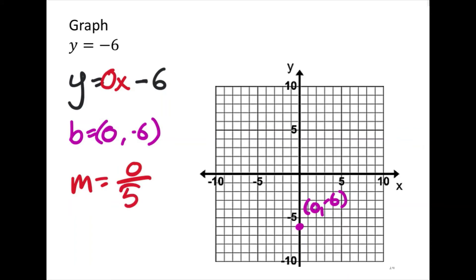So from that purple point, I'm going to go up 0, and then to the right 5, which is this point, up 0 to the right 5. There it is.